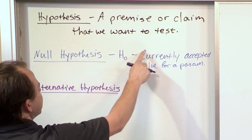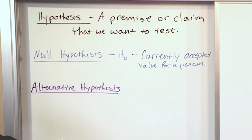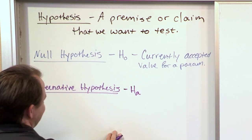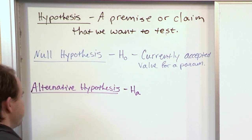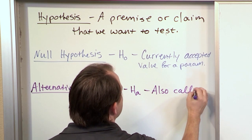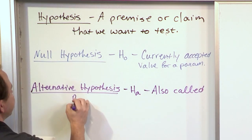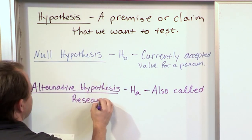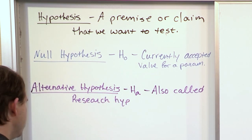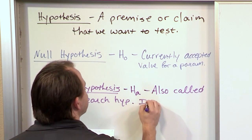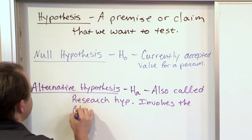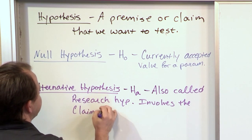The null hypothesis, the currently accepted thing, is H-naught. The alternative hypothesis we call H sub A, because of alternative. This is also called in some books the research hypothesis, and it involves the claim to be tested.